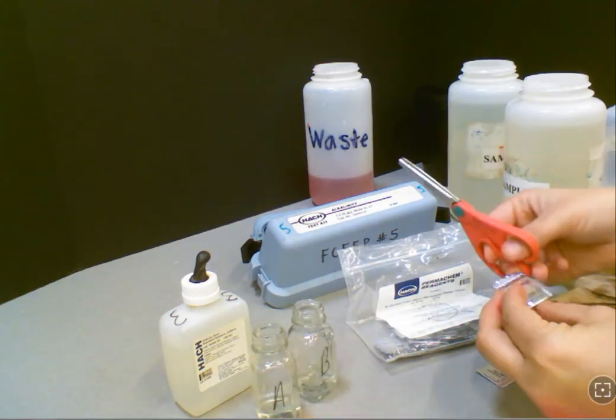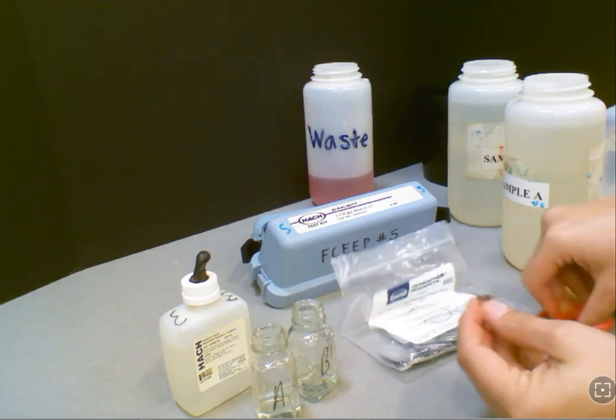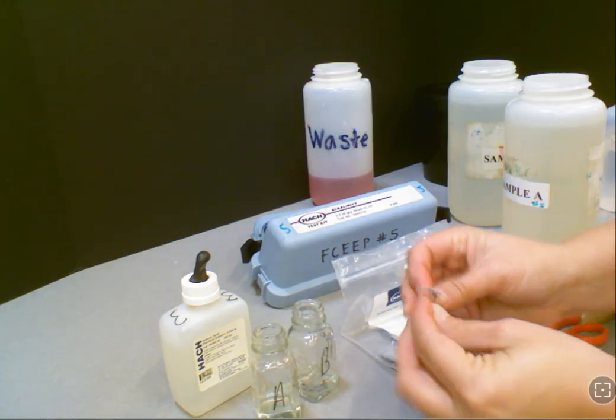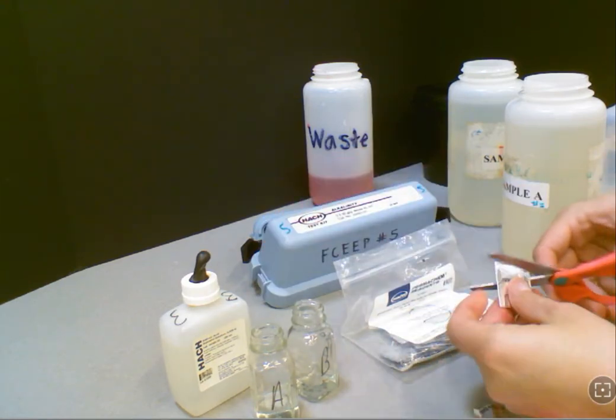So the first chemical you're going to add is phenolphthalein, and if your instructor has marked it, this will be number one. Go ahead and cut open your pillow, and then you're going to pour that into sample A, and then you're going to get another packet and pour it into sample B.